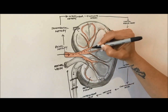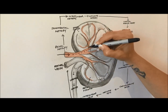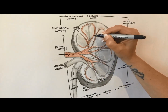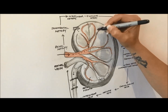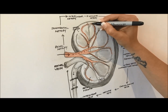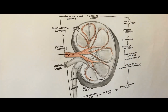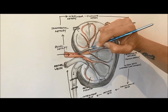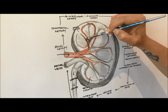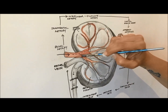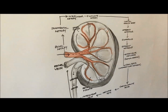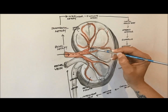One afferent arteriole enters into each nephron, which is the functional unit of the kidneys, and divides into a ball-shaped capillary network called the glomerulus, a condensed mass of capillaries which allow substances to escape via filtration.